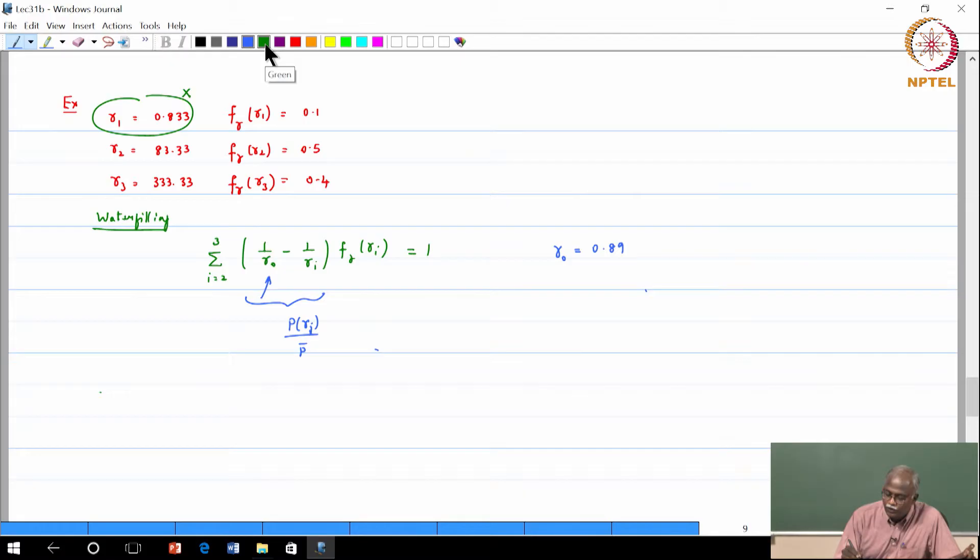So now let us look at the expression for the capacity. Capacity expression is B log base 2 of 1 plus gamma P gamma J, P gamma J by P bar into this would be summation over J F gamma of gamma J.